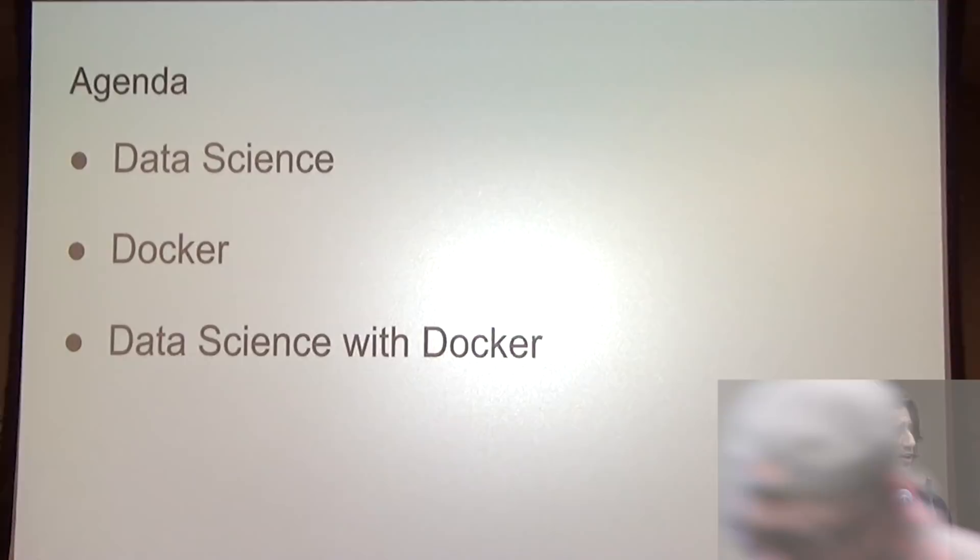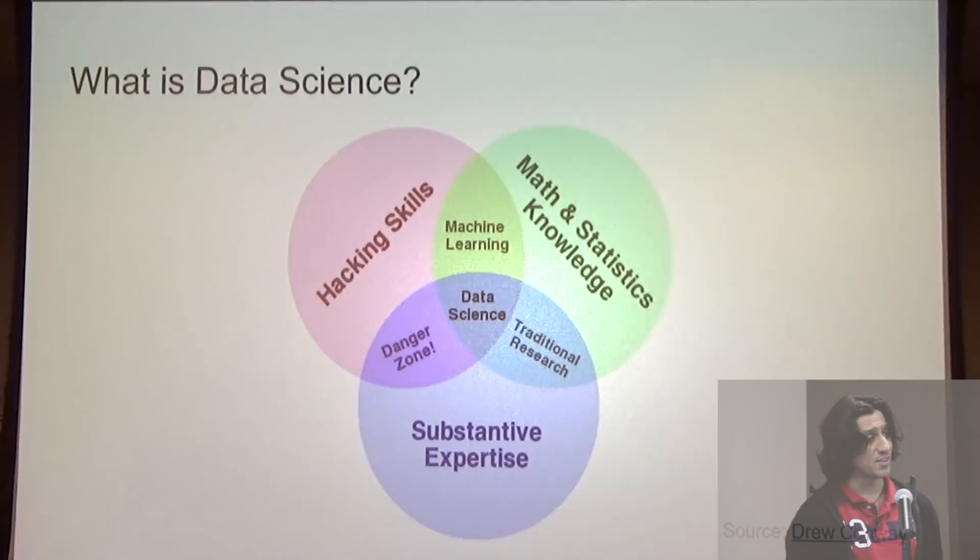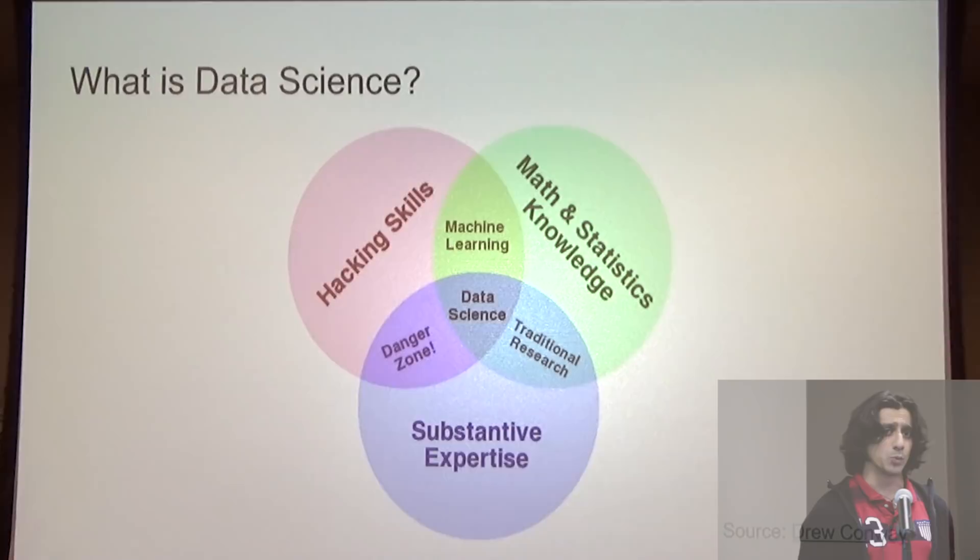What is data science? Data science is about extracting value from data — turning your data into actionable insights. This can mean many different things: we can visually explore our data, build predictive models, classify observations into groups based on similar characteristics, or build data-driven applications.